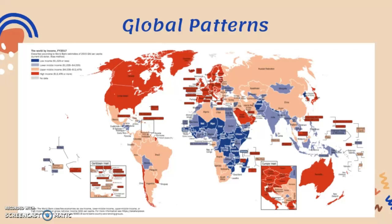In general, the high-income countries are concentrated in North America and Europe, as well as Australia. The lower-income countries are centralized around Africa and some parts of Asia. Just have an awareness of the global spread of different levels of economic development.